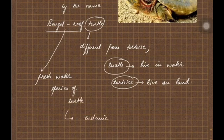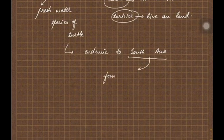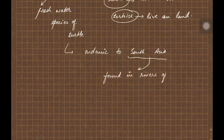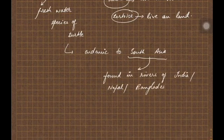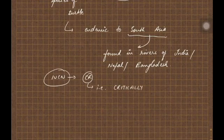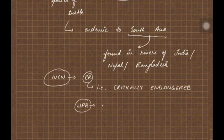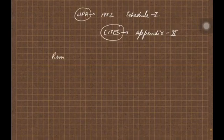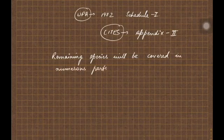It is endemic to South Asia. Earlier it was endemic only to India, but now it is found in the rivers of India, Nepal, and Bangladesh. The IUCN status is critically endangered, very important from examination point of view. It is protected under Schedule 1 of Wildlife Protection Act 1972, the highest level protection, and in CITES it is provided under Appendix 2.